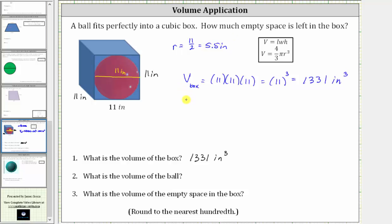So the volume of the ball, V-sub-ball, is equal to 4/3 pi times r cubed, where r is 5.5 inches. Now let's determine the exact value as well as the approximate value to the nearest hundredth.